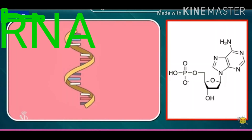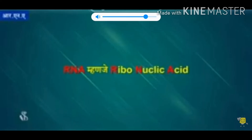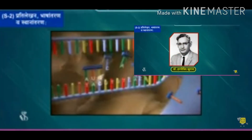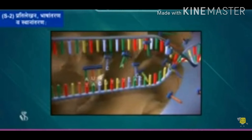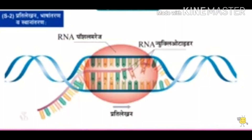The term triplet codon means the code for each amino acid consists of three nucleotides — it is called a triplet codon. RNA means ribonucleic acid. Dr. Har Gobind Khorana, a scientist of Indian origin, made an important contribution in the discovery of the triplet codon. He was awarded the Nobel Prize in 1968.